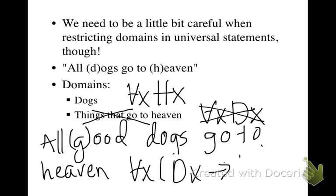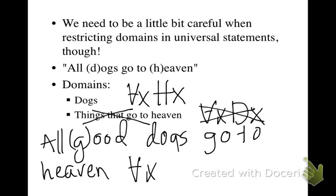...restrict the domain to good dogs, and then we would say that for every x, x goes to heaven. Because all good dogs go to heaven, and we're only talking about good dogs in that statement because we've restricted the domain to just good dogs, so everything goes to heaven.